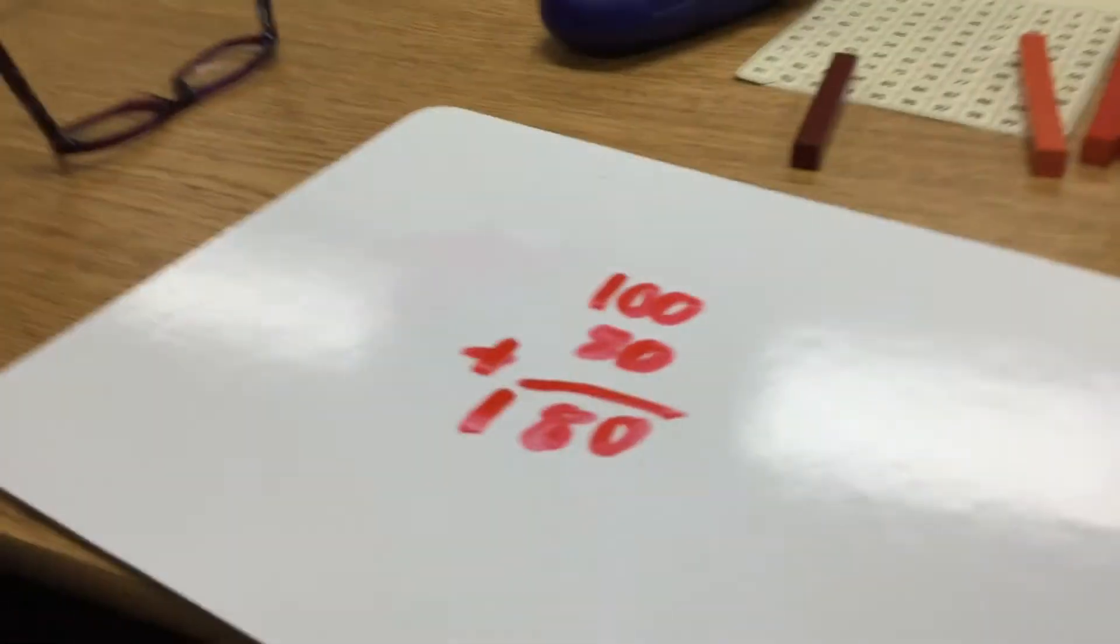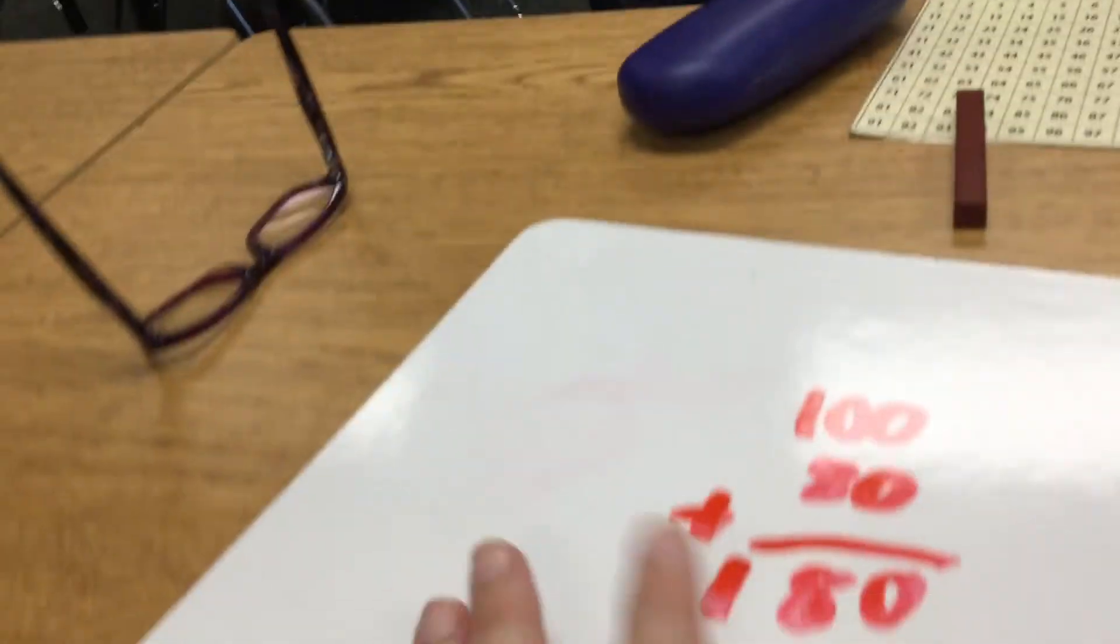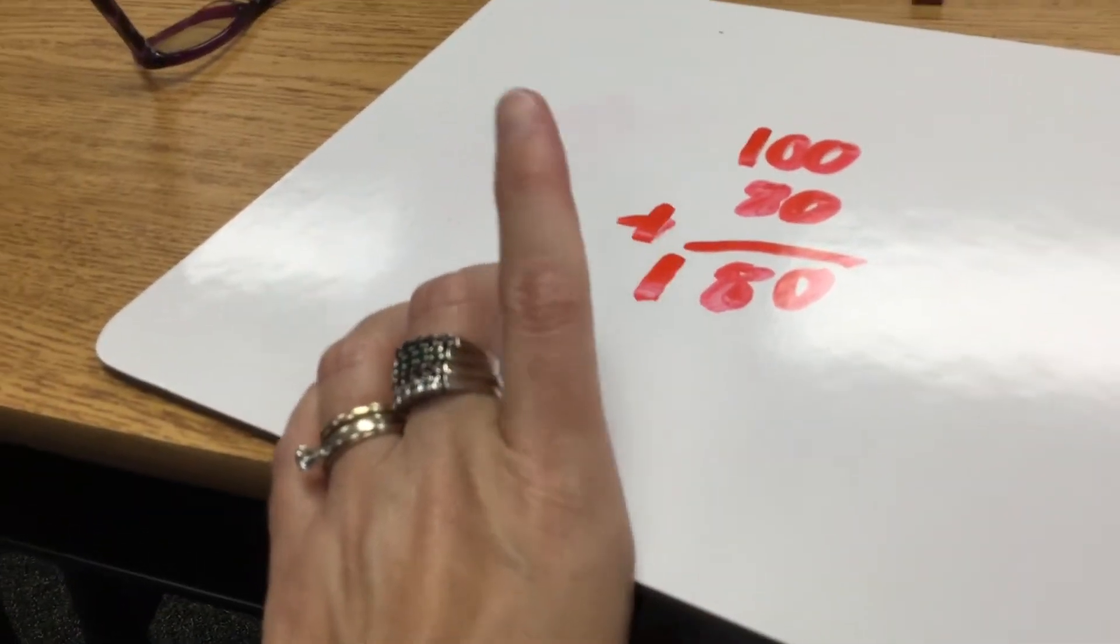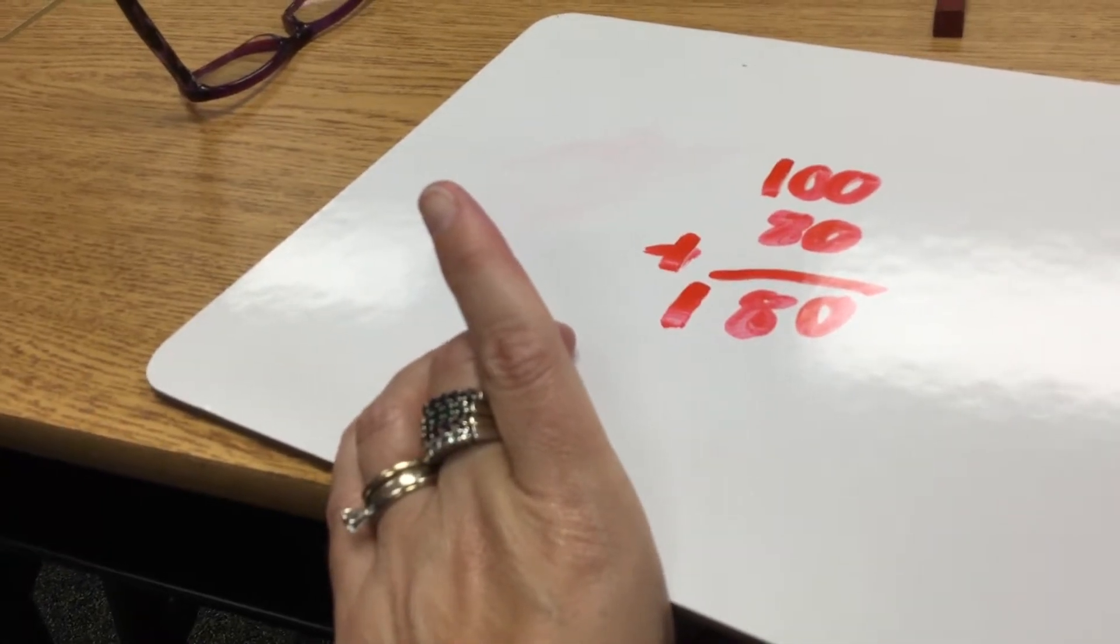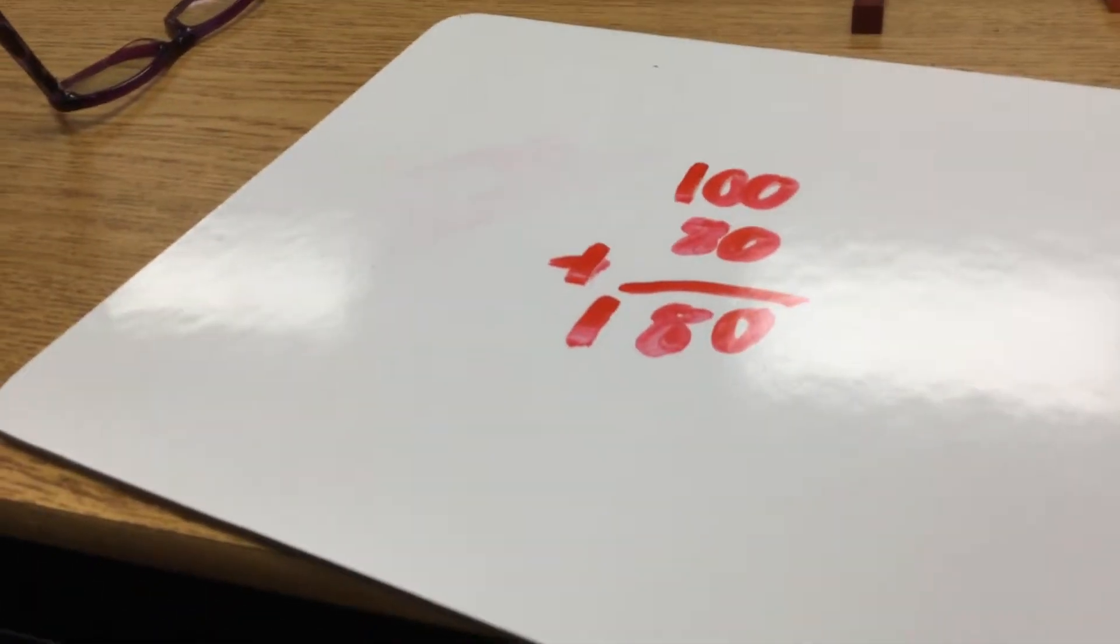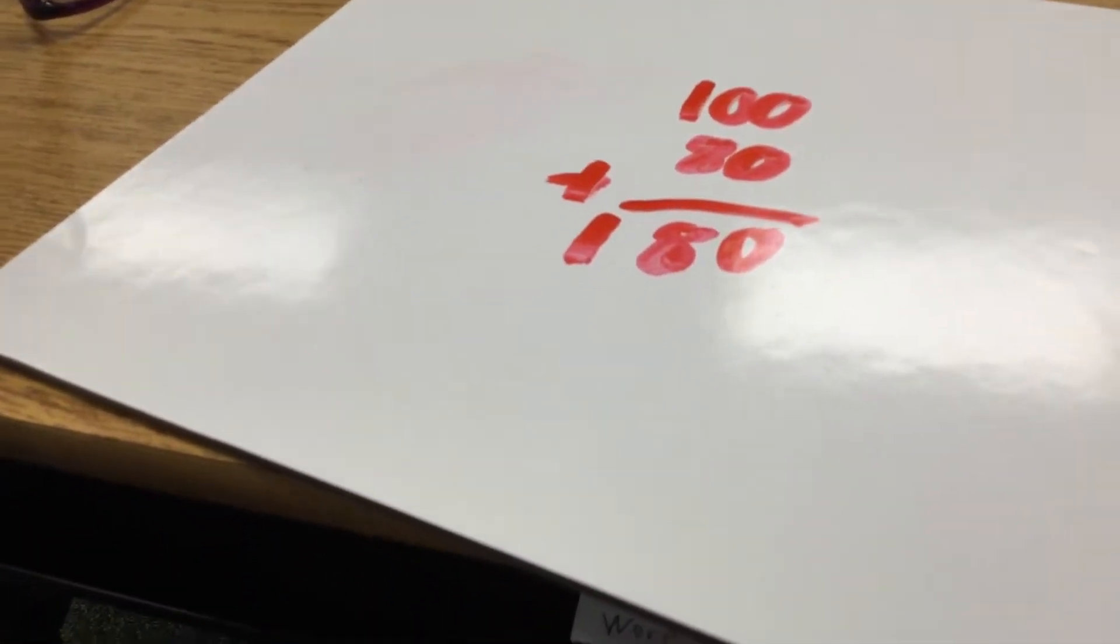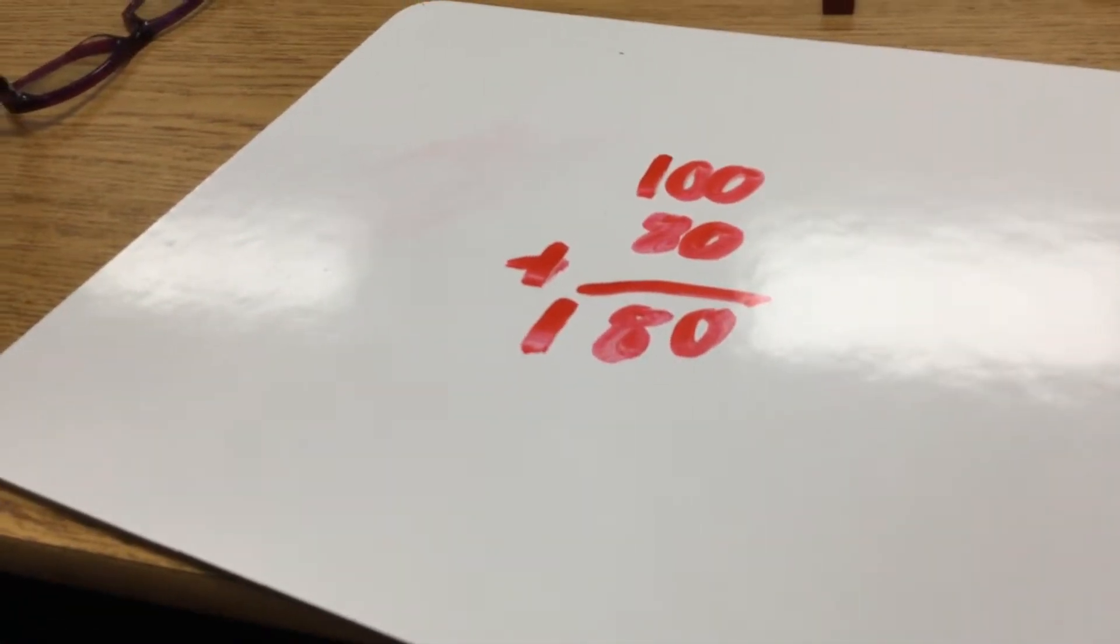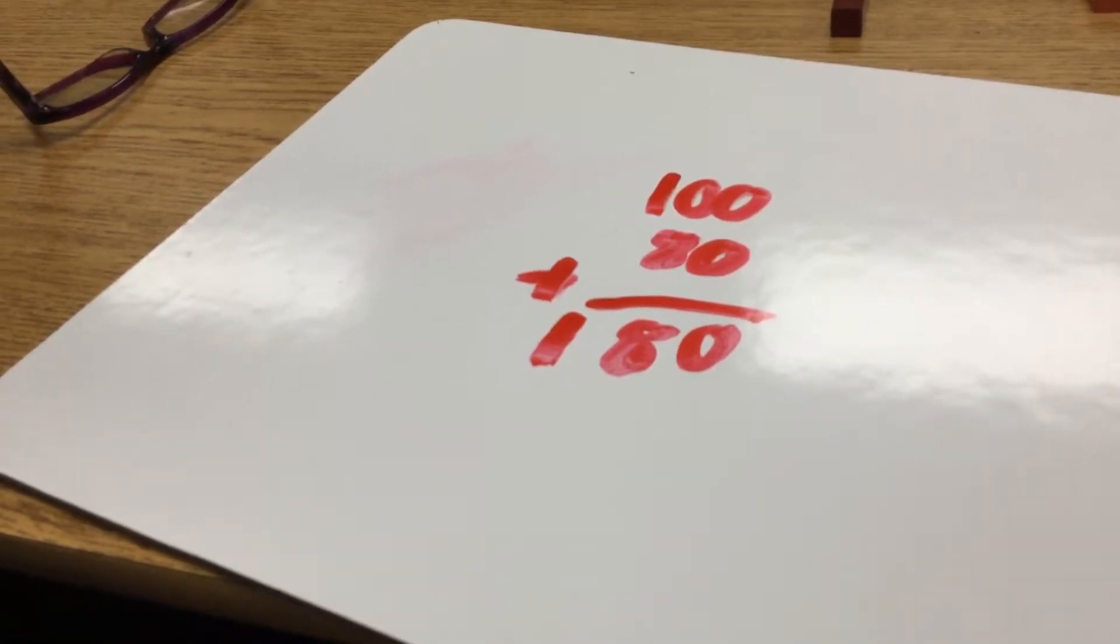Okay. So I'm going to ask you something. If I were to cover up this 1, what number is that? 80. And now I put that 1 there. What number is it? 180. 180? Okay. Because the first time you said 108. Is it 108 or 180?